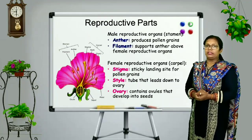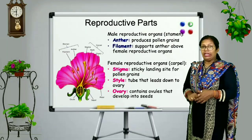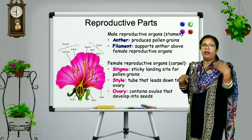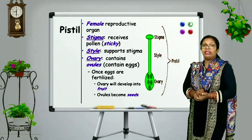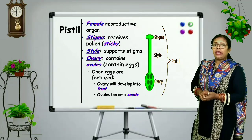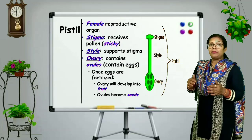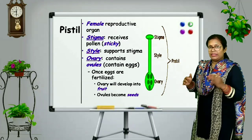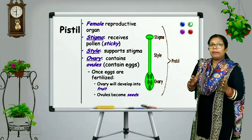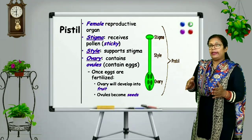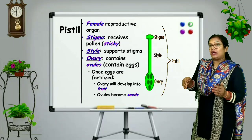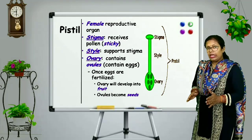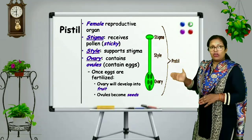Now we will talk about the innermost whorl of the floral part, that is the gynoecium. Gynoecium is the female reproductive organ, which is also known as pistil or carpel. Carpels or pistils are collectively known as gynoecium. This is the female reproductive organ of the flower.